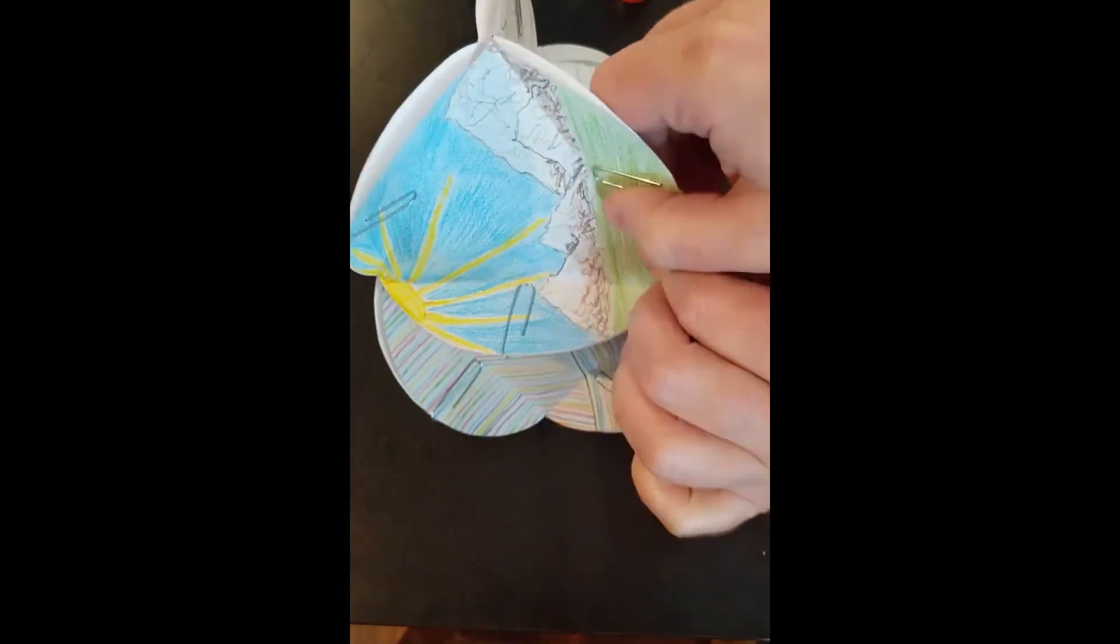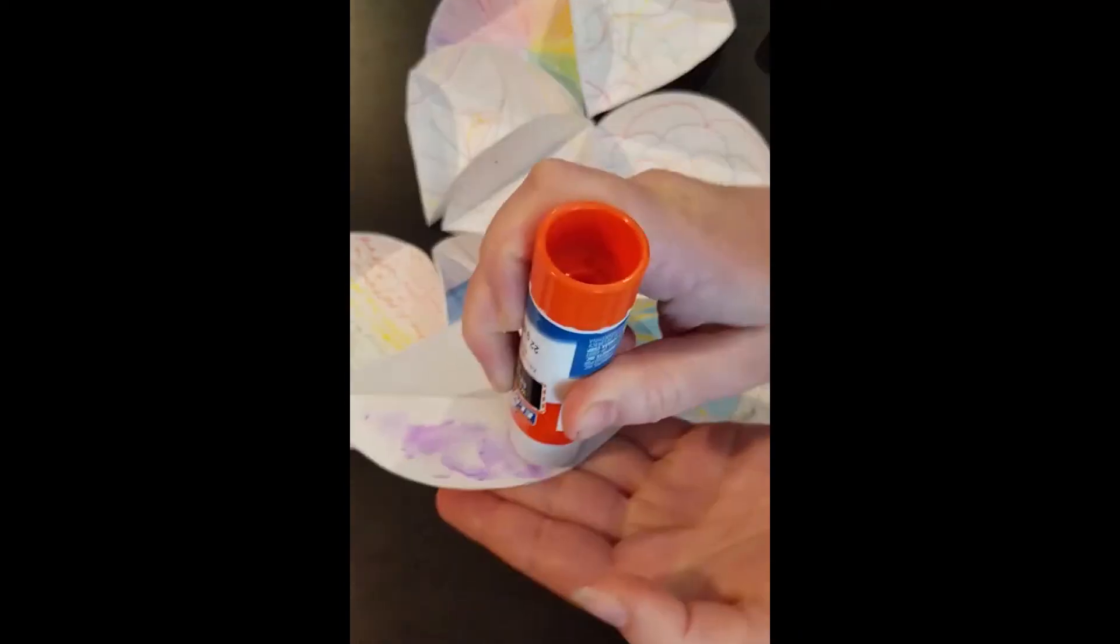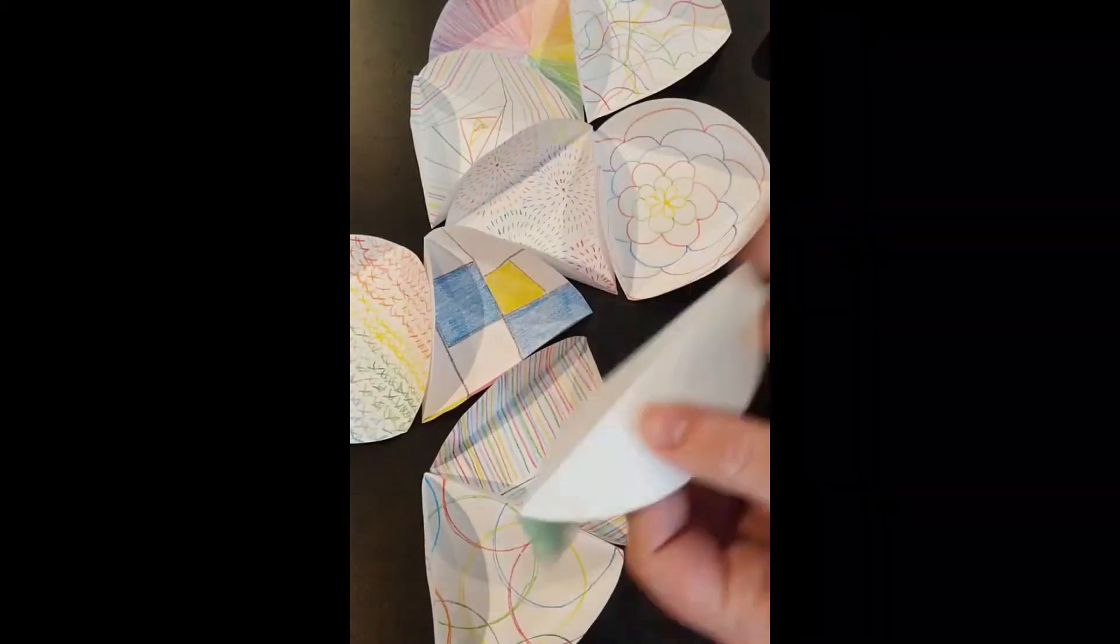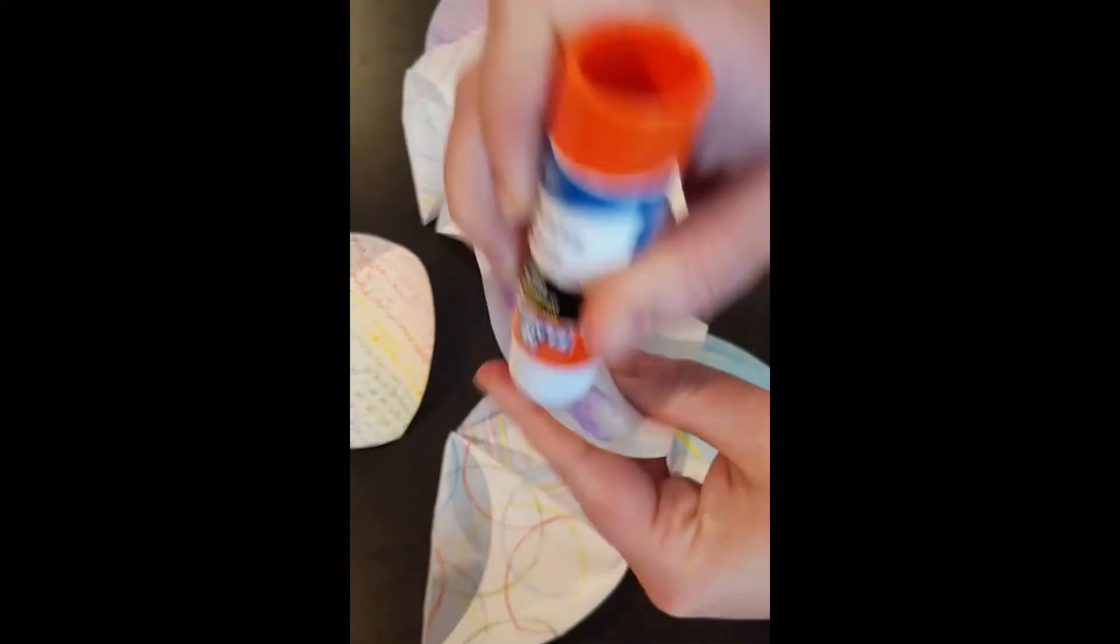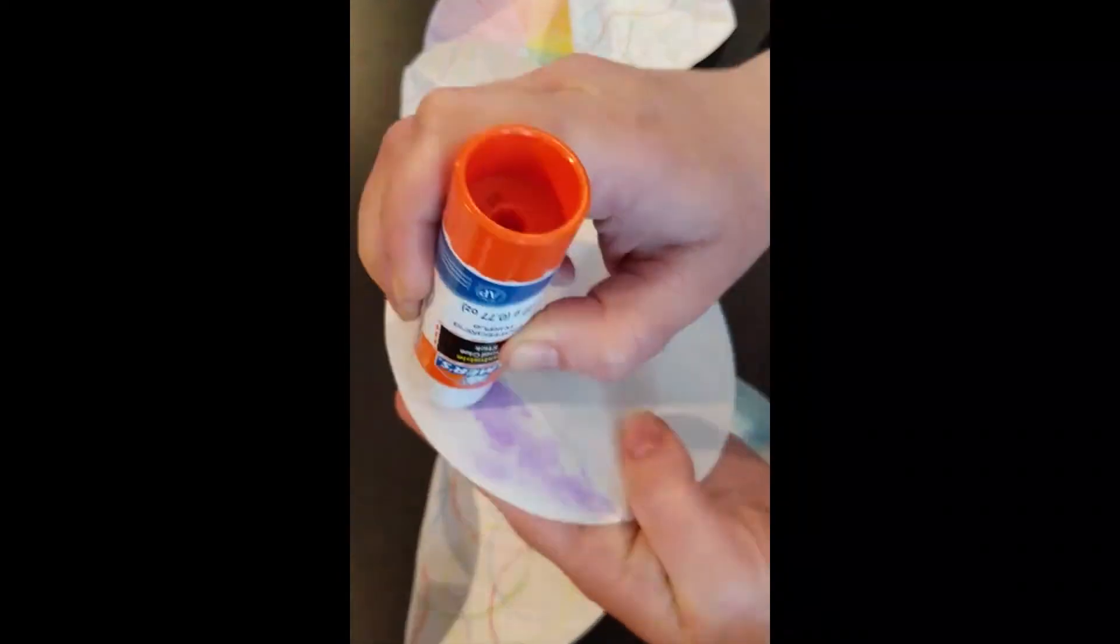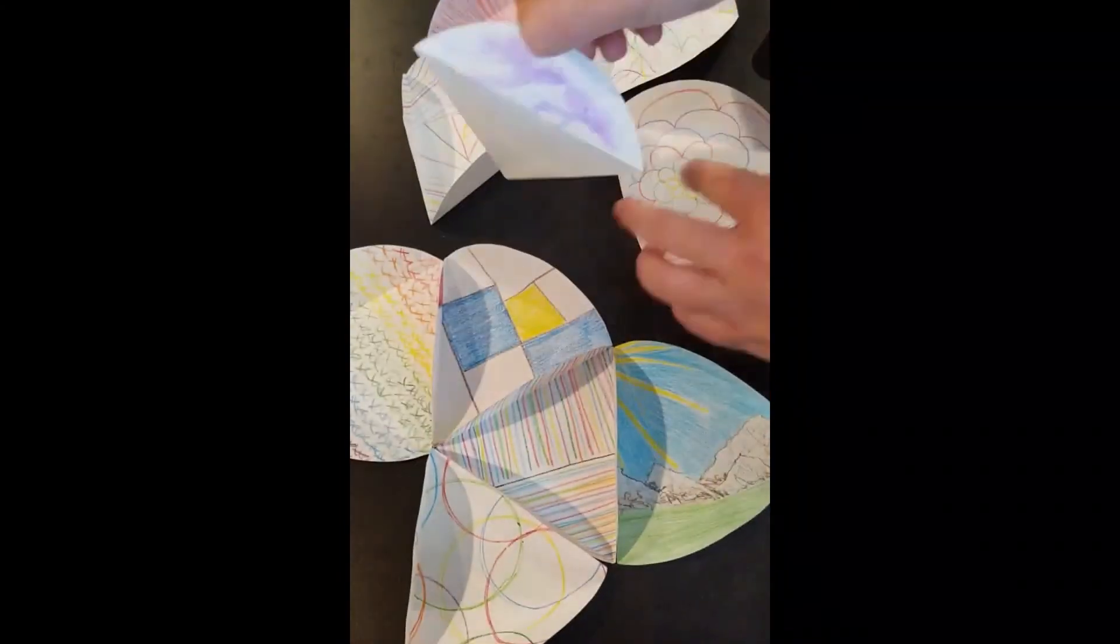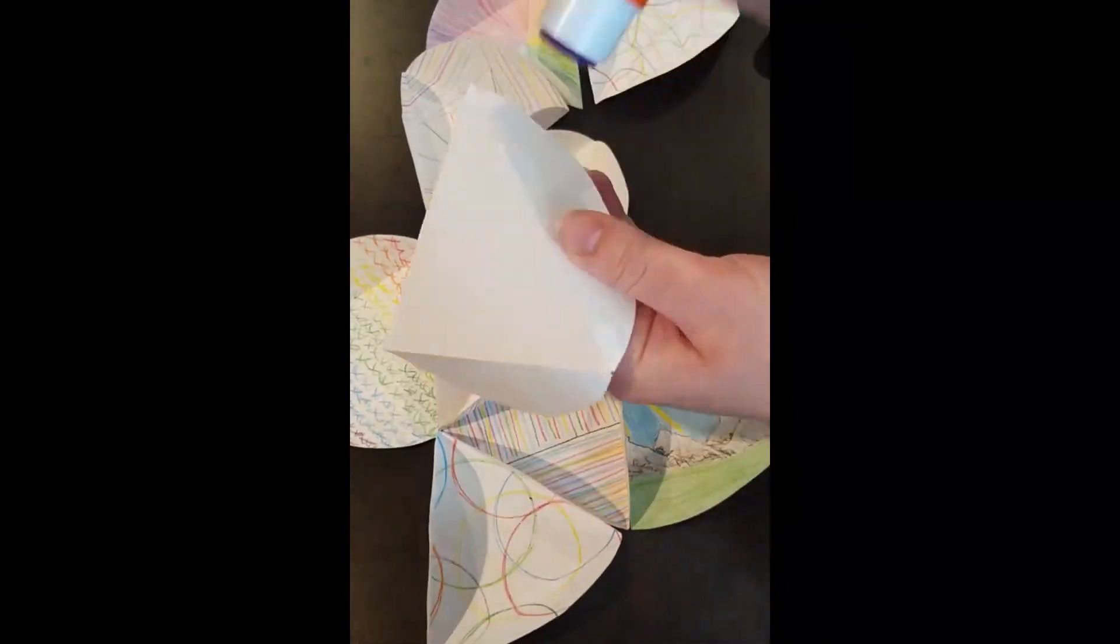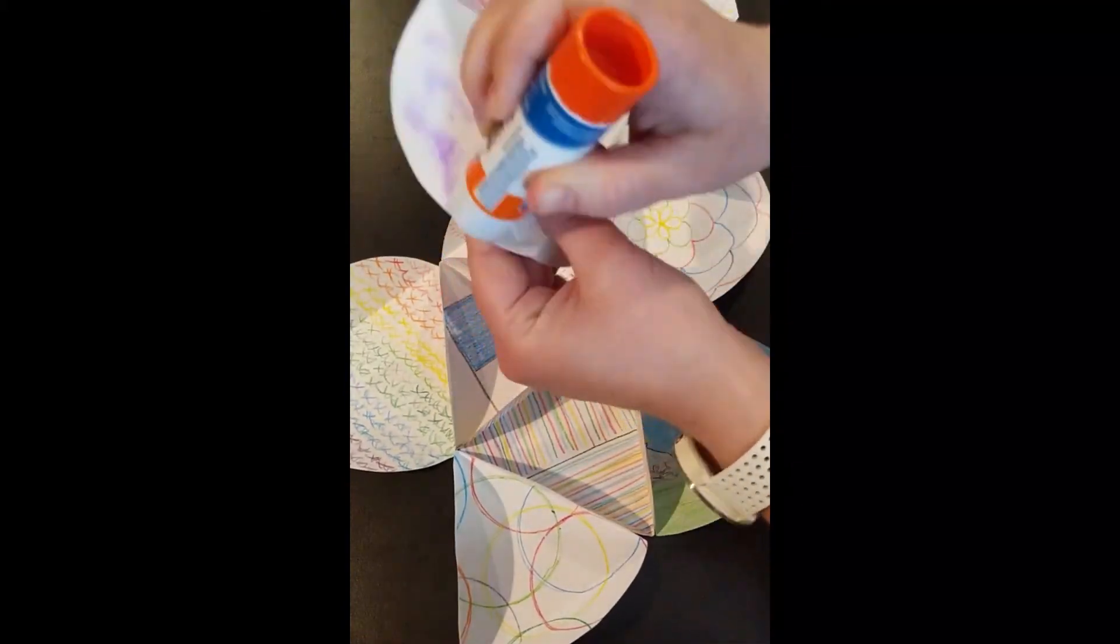So putting it together. I found it easiest to play with the shapes that you want. Again, this is a 10-sided sculpture, but you can use more. You can experiment. The easiest way I found to do that is to grab some paper clips or even some staples if you don't mind poking some holes in your sculpture, and putting it together sort of temporarily before you glue it all together at the end.